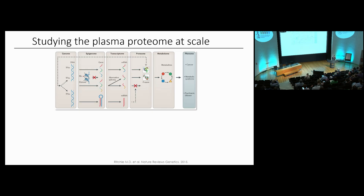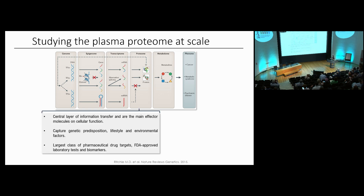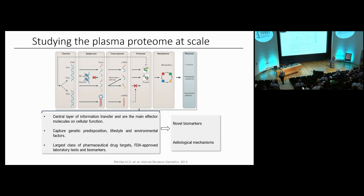If we look at how information flows from the genome to the phenome, we see how proteins really sit at the heart of it. They are the main effector molecules on cellular function. As such, they capture both information on genetic disposition and lifestyle and environmental influences. They are also the largest class of pharmaceutical drug targets and FDA-approved lab tests. Studying proteins provides unique opportunities to identify novel biomarkers and inform etiological mechanisms involved in disease development.